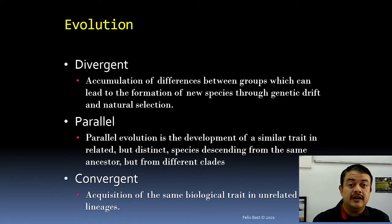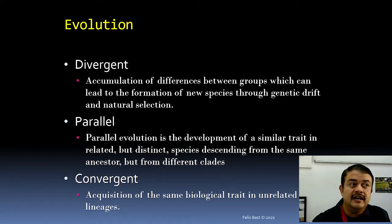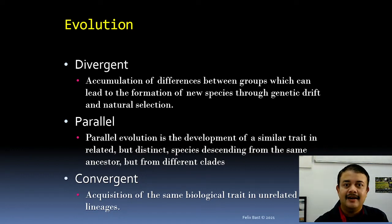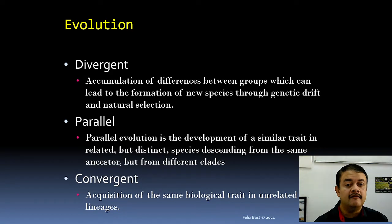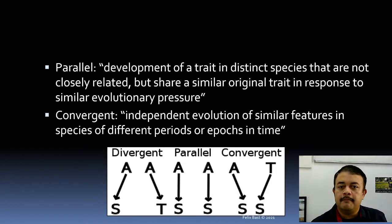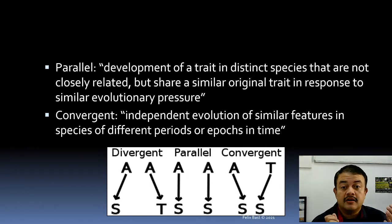Convergent evolution is spurious — not real evolutionary relatedness but a mistake in interpretation. It means the acquisition of the same biological trait in completely unrelated lineages — for example, butterfly wings, bird wings, and bat wings. Grouping these organisms together based on wings would be wrong. Parallel evolution means development of similar traits in related but distinct species descending from the same ancestor but from different clades — a mix of divergence and convergence.